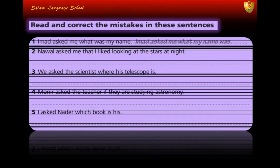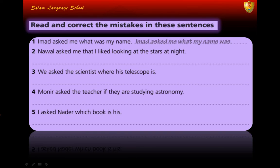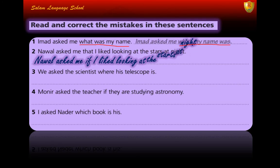The next exercise: read and correct the mistakes in these sentences. Number one: 'Imad asked me what was my name' — the correct answer is 'Imad asked me what my name was.' The word order must be subject before verb. Number two: 'Noel asked me that I liked looking at the stars at night' — the correct answer is 'Noel asked me if I liked looking at the stars at night.'